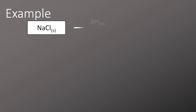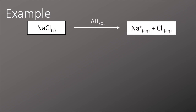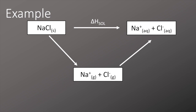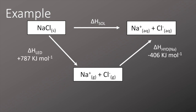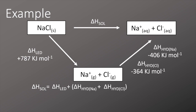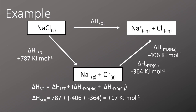Let's look at an example of sodium chloride dissolving to form aqueous sodium ions and aqueous chloride ions. We draw the alternative pathway via the gaseous ions underneath and add in the lattice enthalpy of dissociation, the enthalpy of hydration for sodium, and the enthalpy of hydration for chlorine. Writing out the equation: enthalpy of solution equals the lattice enthalpy of dissociation plus the sum of the hydration enthalpies for sodium and chlorine. Substituting in the numbers, we get +17 kJ/mol for this whole process.